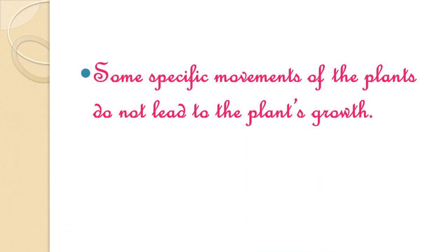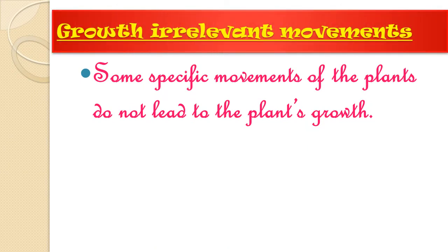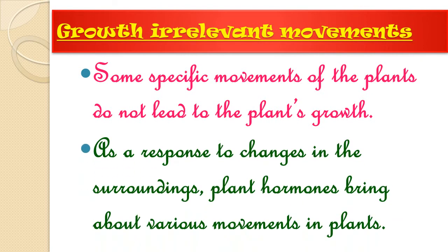Some specific movements of the plant do not lead to the plant's growth, and such movements are called growth-irrelevant plant movements. Movements related to the growth of a plant are growth-relevant, while movements that do not lead to plant growth are growth-irrelevant. In response to changes in the surroundings, plant hormones bring about various movements in plants.